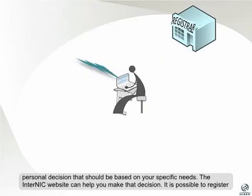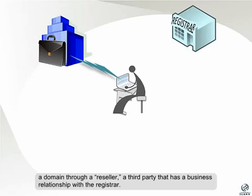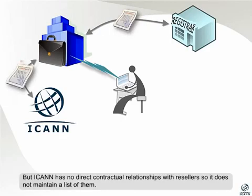It's possible to register a domain through a reseller, a third party that has a business relationship with the registrar. But ICANN has no direct contractual relationships with resellers, so it does not maintain a list of them.